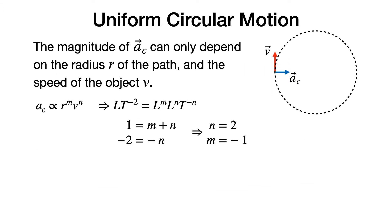By equating powers of the same units on both sides of the equation, for length — which is to the first power on the left-hand side — we get m plus n. For time — which is to the power minus 2 on the left — we get minus n. We immediately see that n equals 2, m equals minus 1, and that the centripetal acceleration must therefore be proportional to the speed squared divided by the radius.